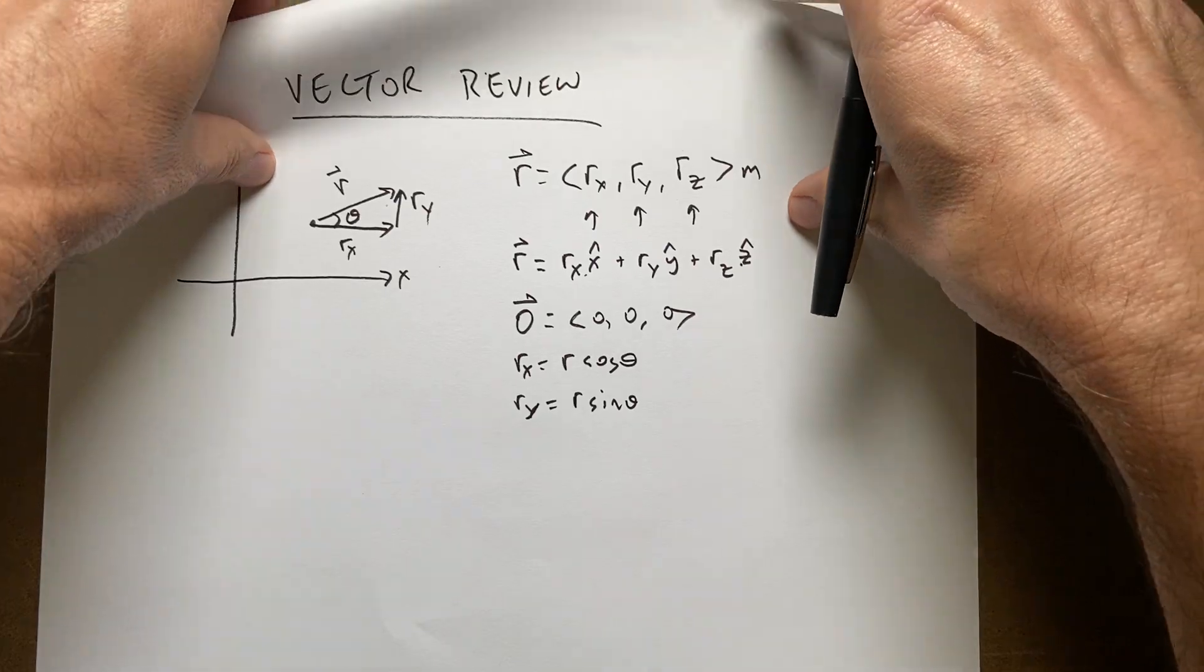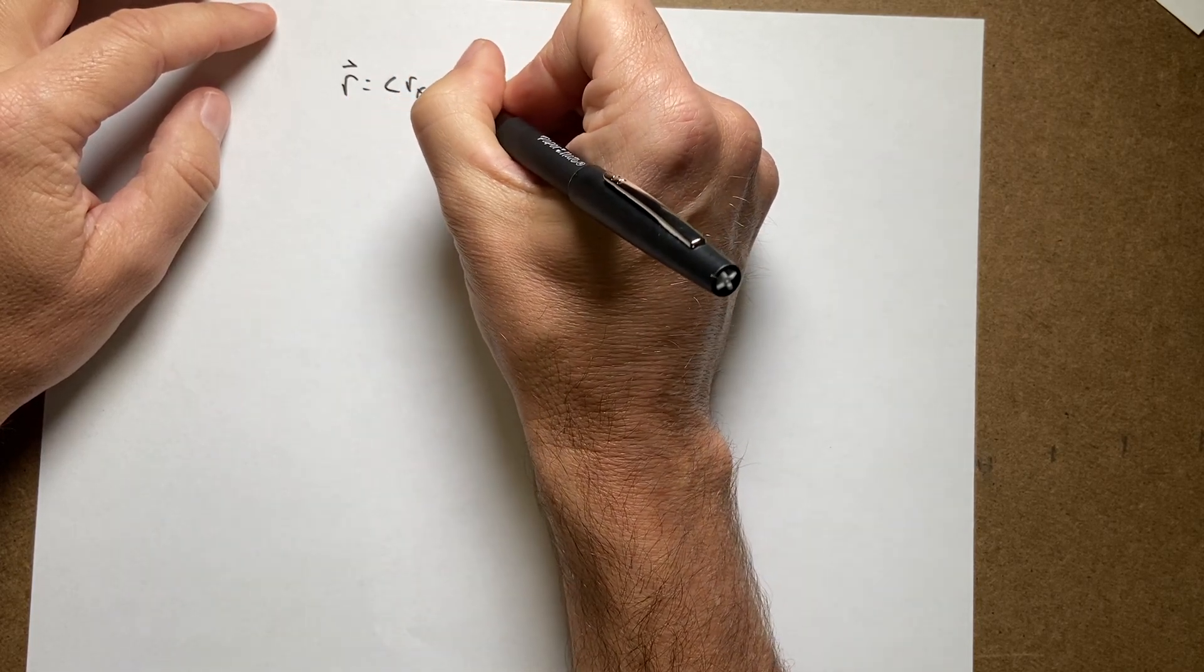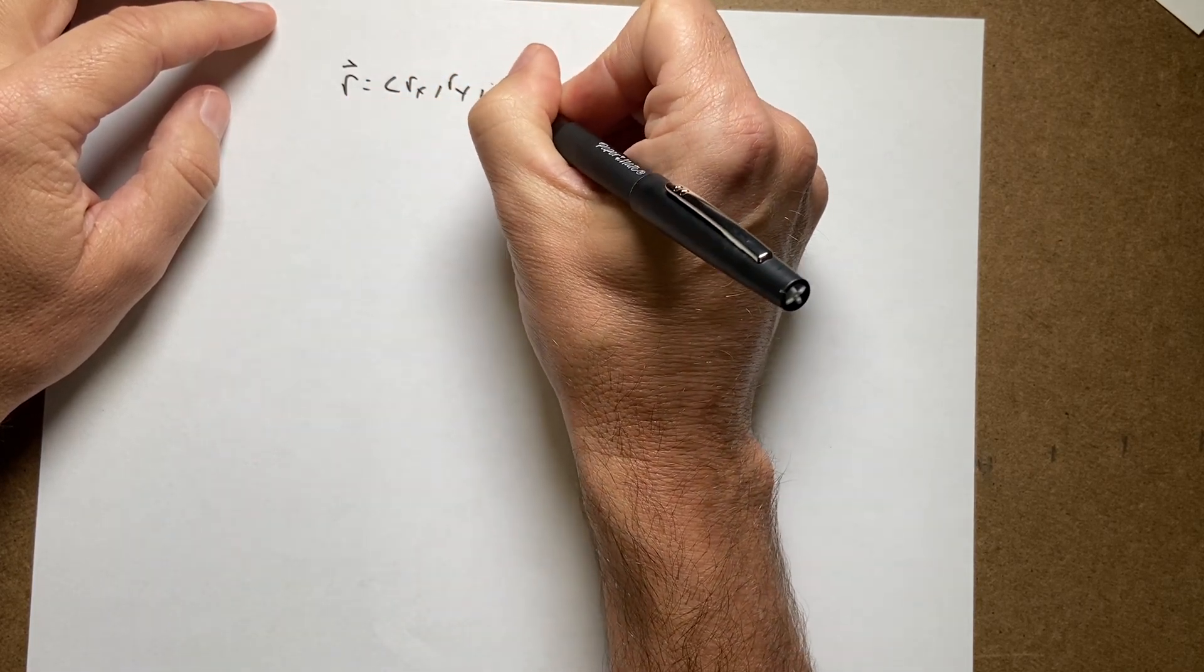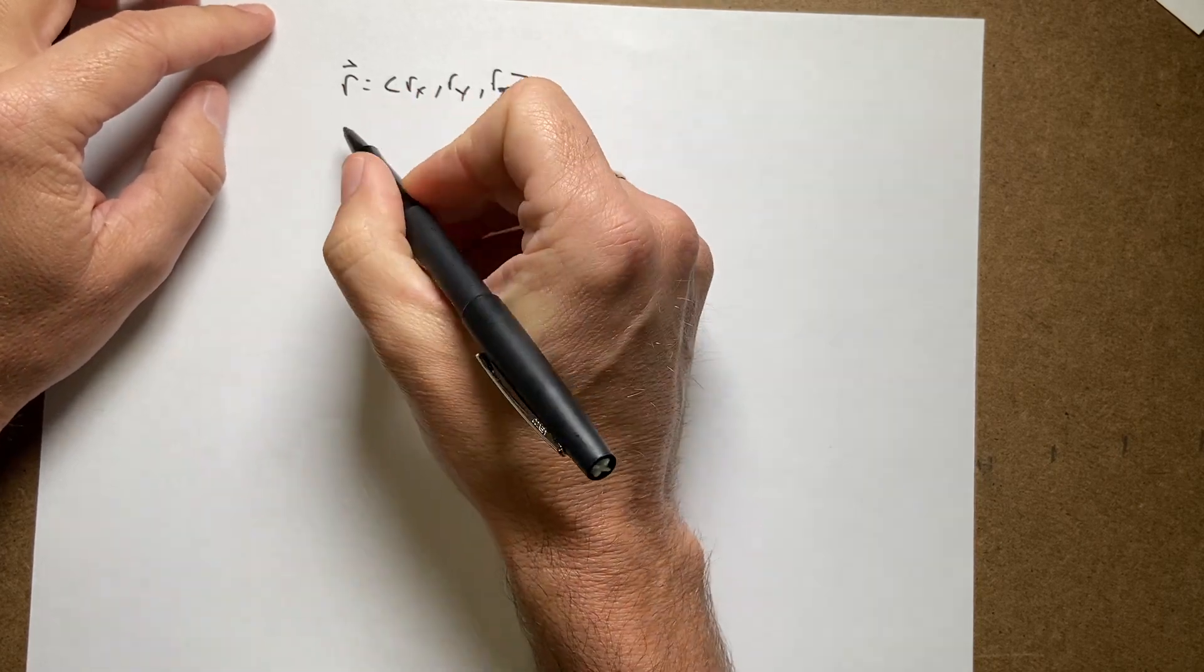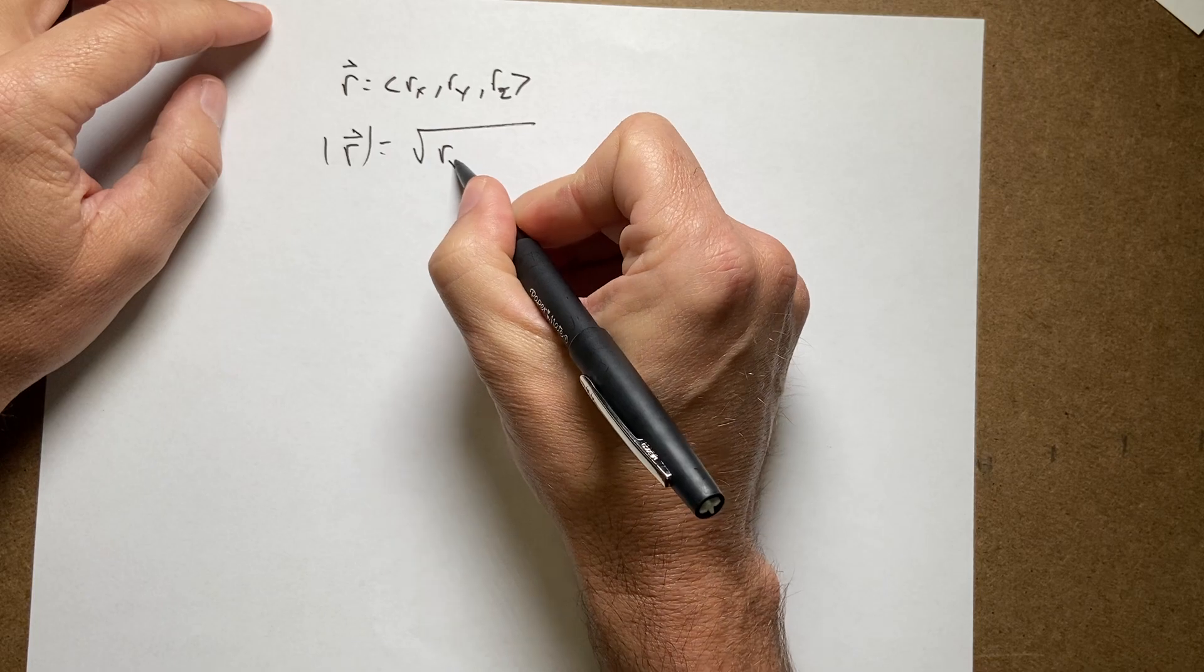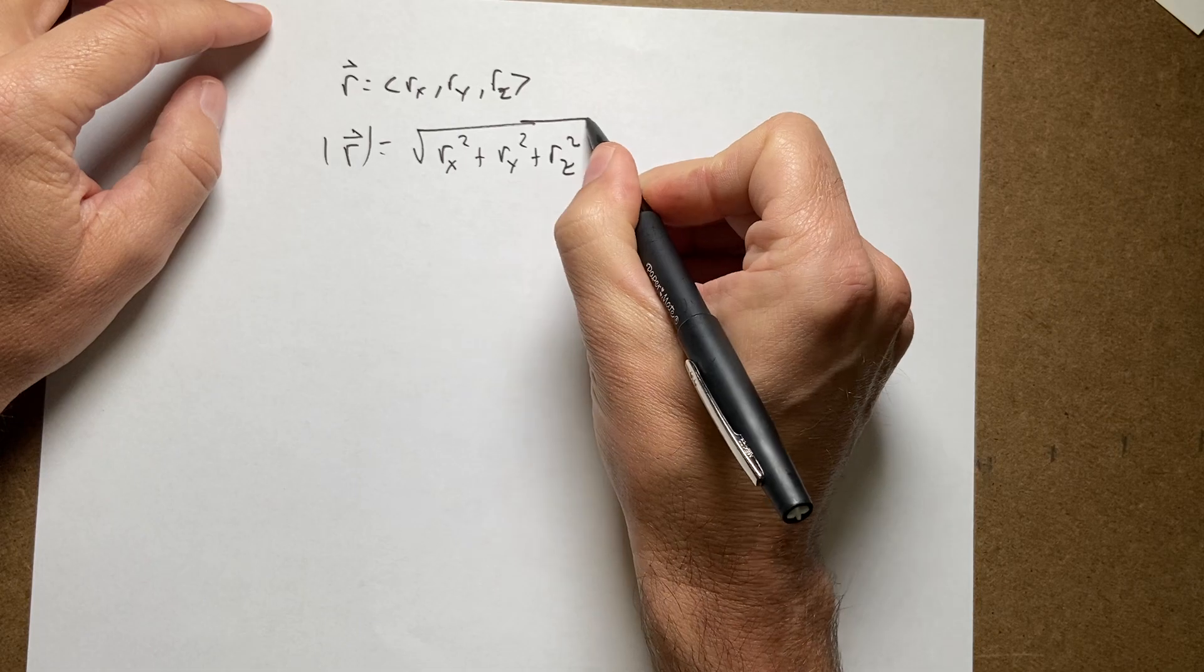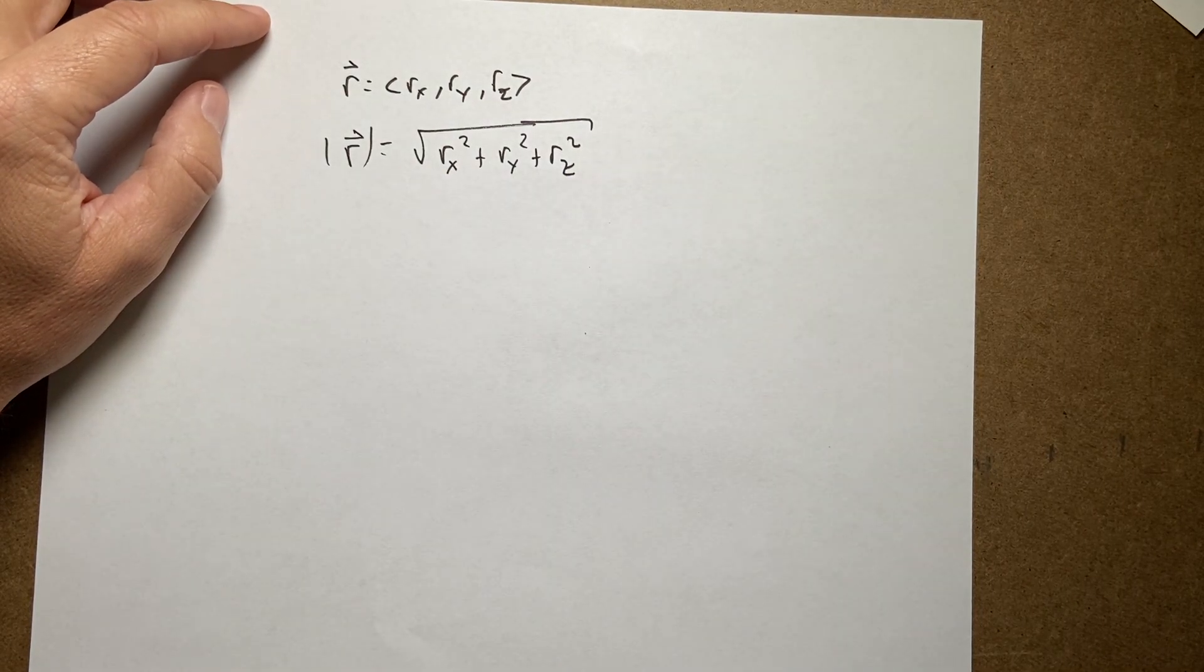What about finding the magnitude of a vector? I'm just going to skip to another paper. So again, let's say r equals rx, ry, rz. The magnitude of the vector r is going to be the square root of rx squared plus ry squared plus rz squared. It's just like Pythagorean theorem but in three dimensions.